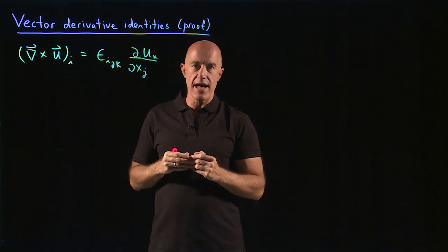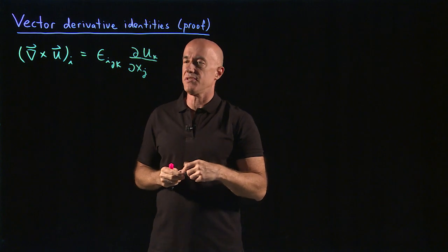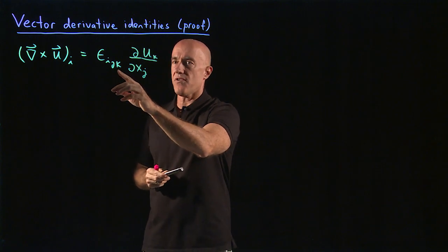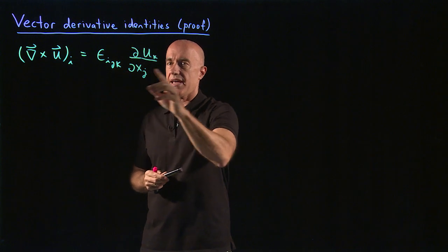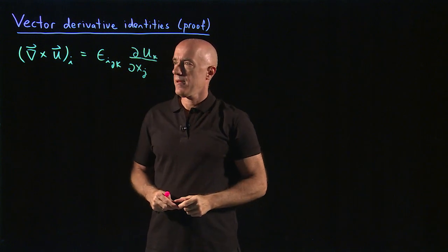And remember that we have the Einstein summation convention. So we're summing over both j and k. So j equals 1, 2, 3, k equals 1, 2, 3.